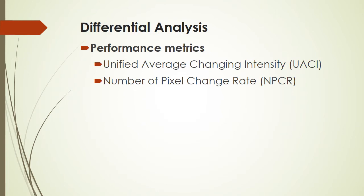The performance metrics used to measure the strength of the crypto system against a differential attack are Unified Average Changing Intensity (UACI) and Number of Pixel Change Rate (NPCR).